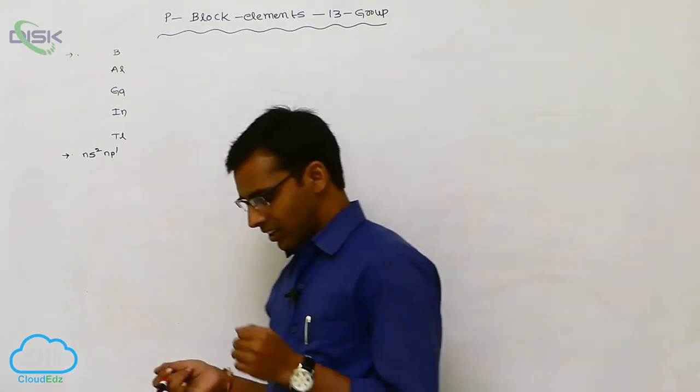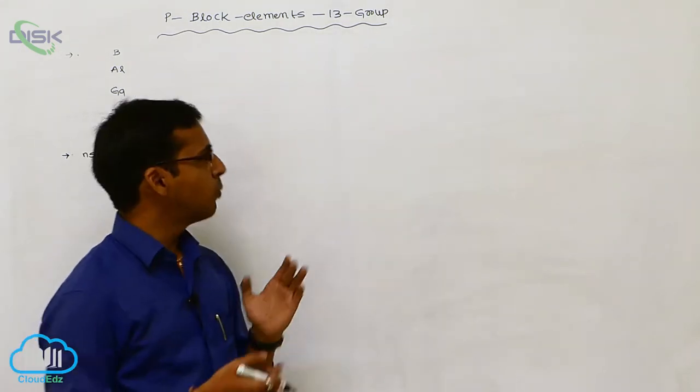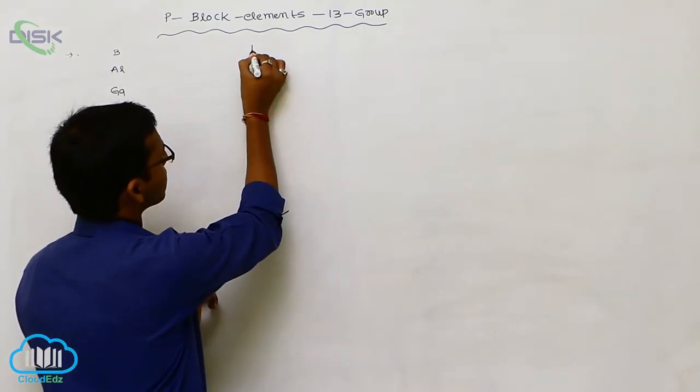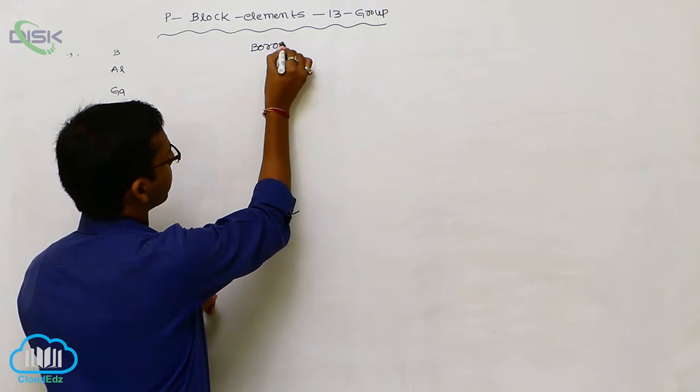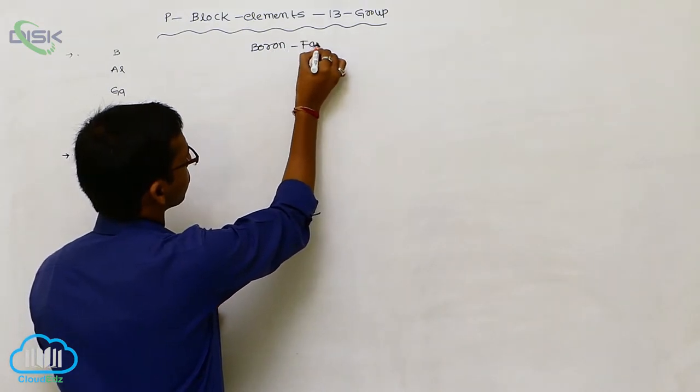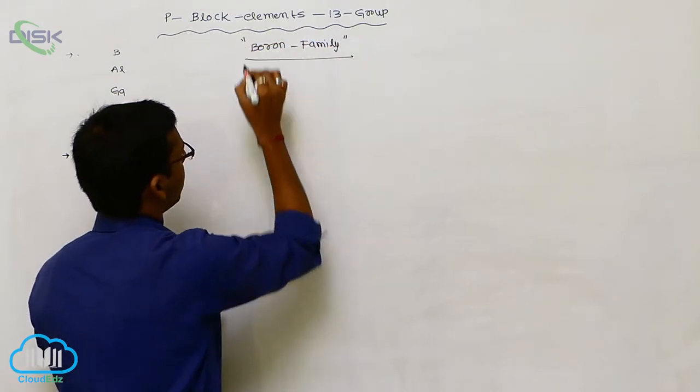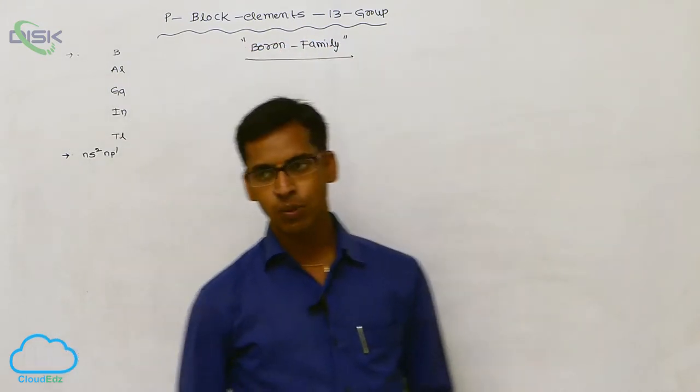These 13A group elements are also called the boron family, named after boron, the first element in the group.